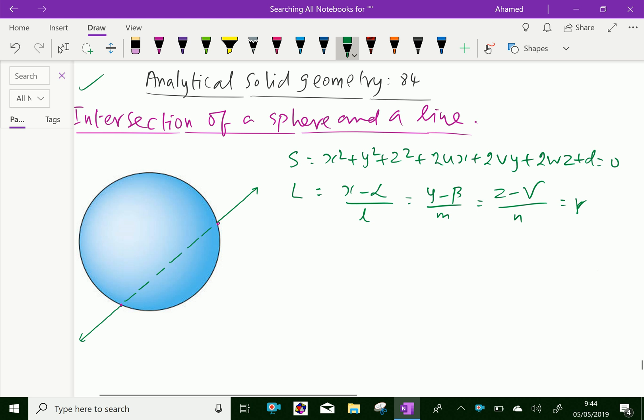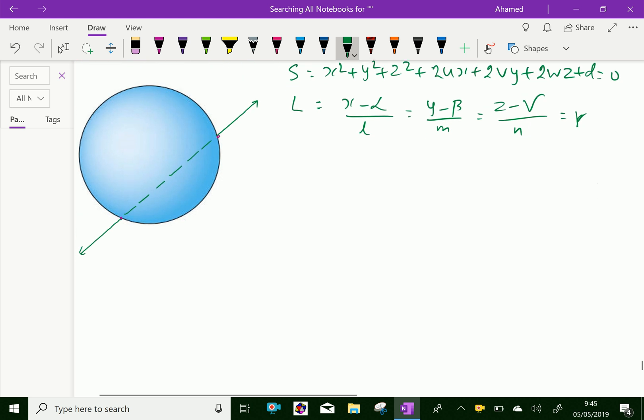Now, suppose the point lr plus alpha, mr plus beta, nr plus gamma, which lies on the given line.